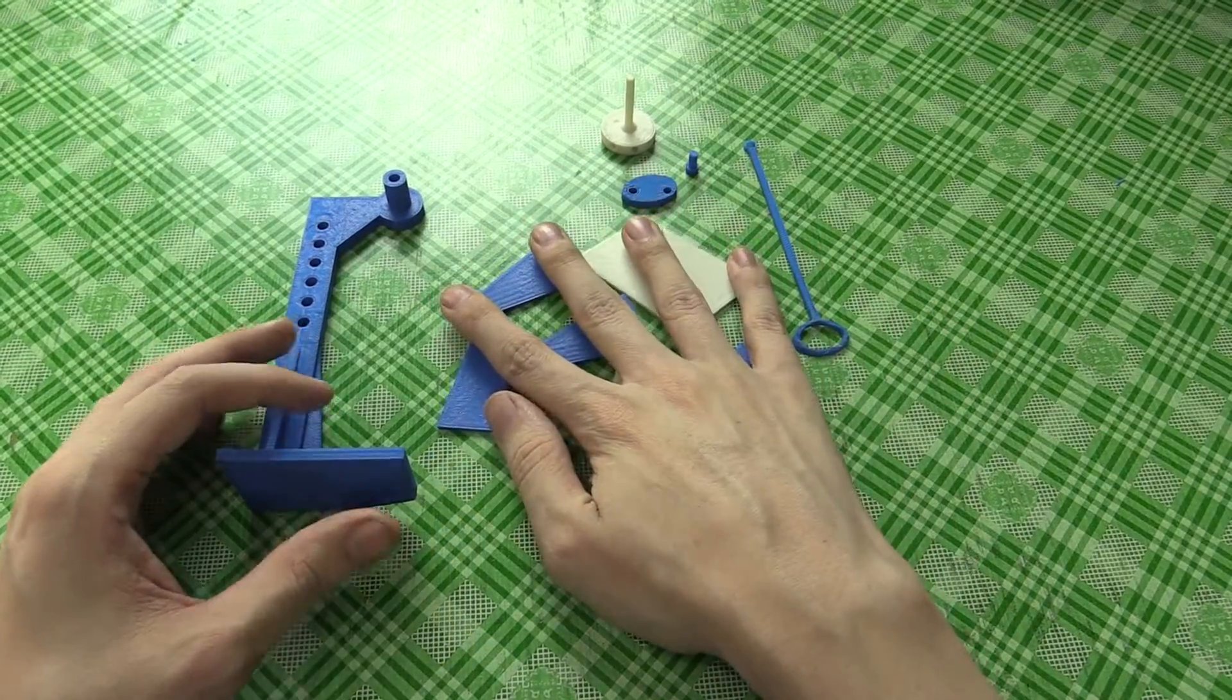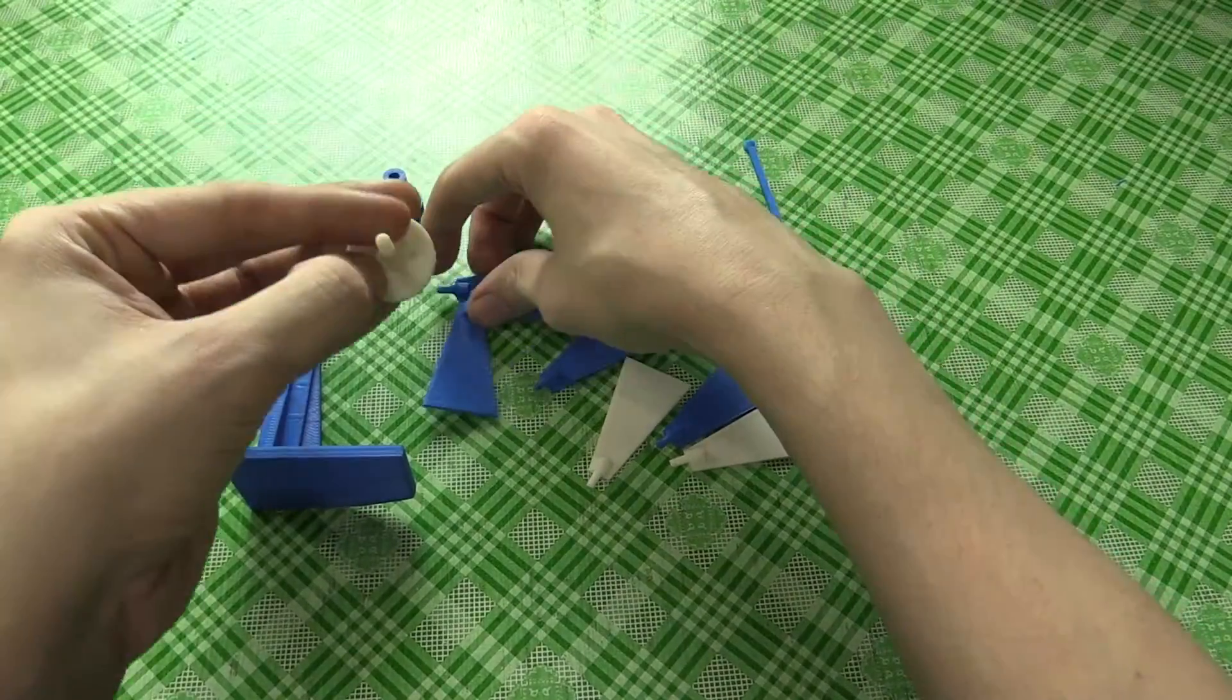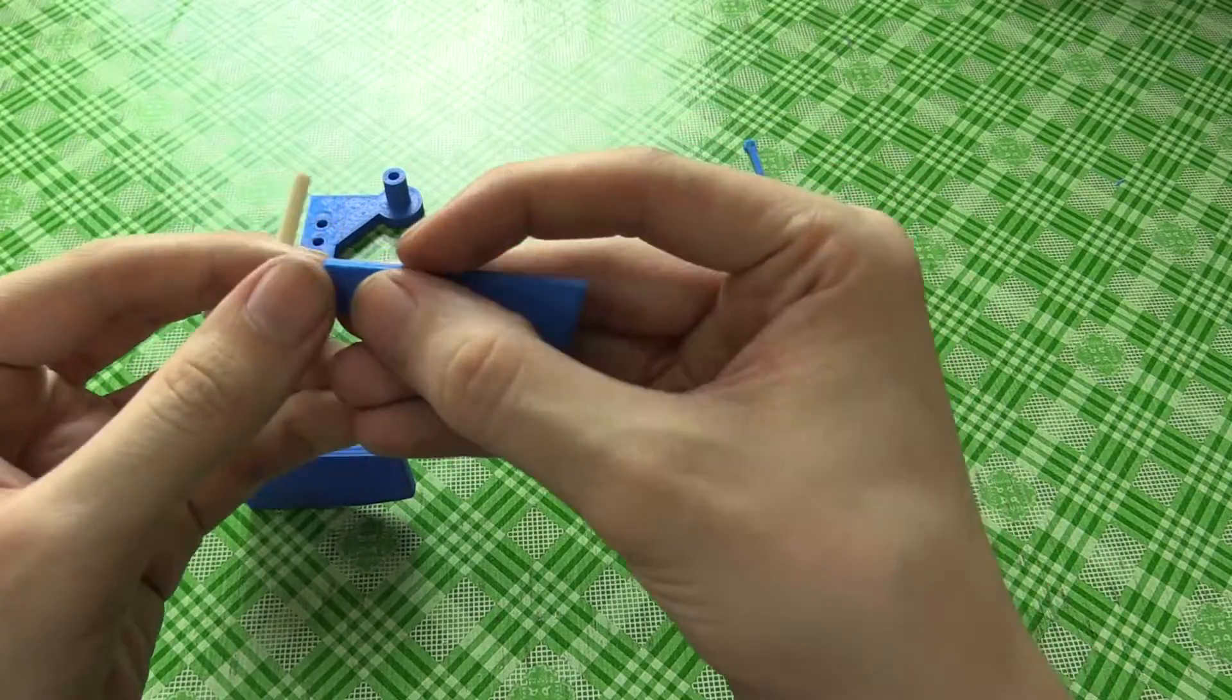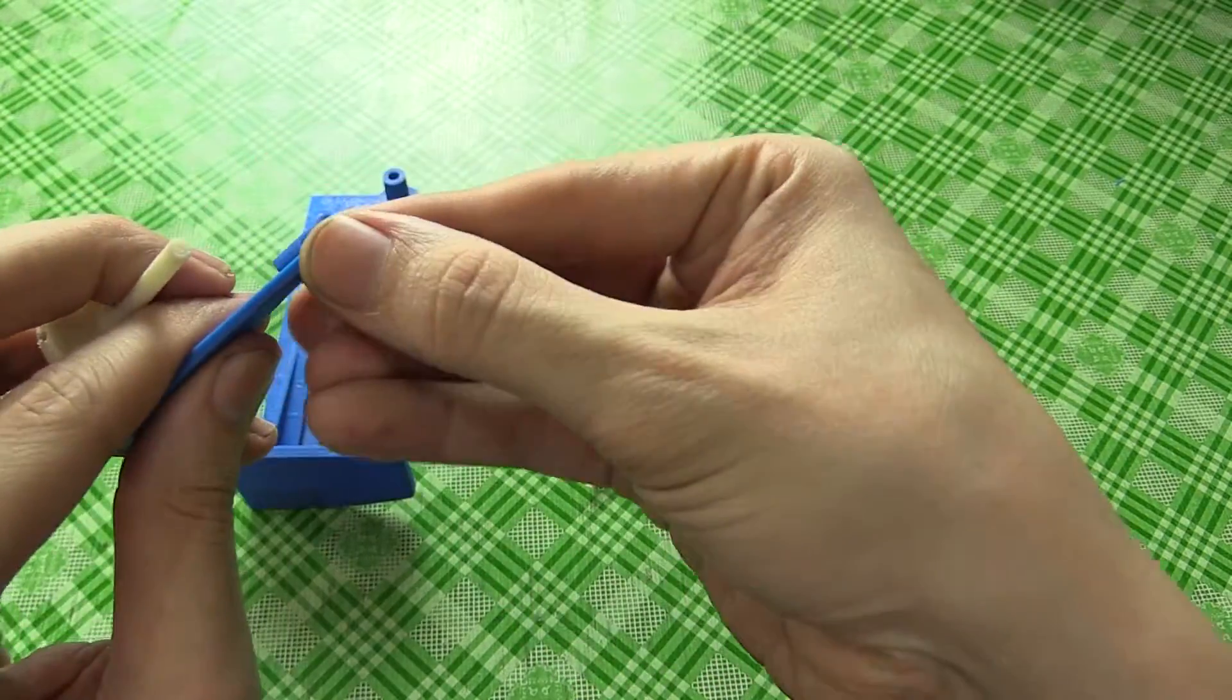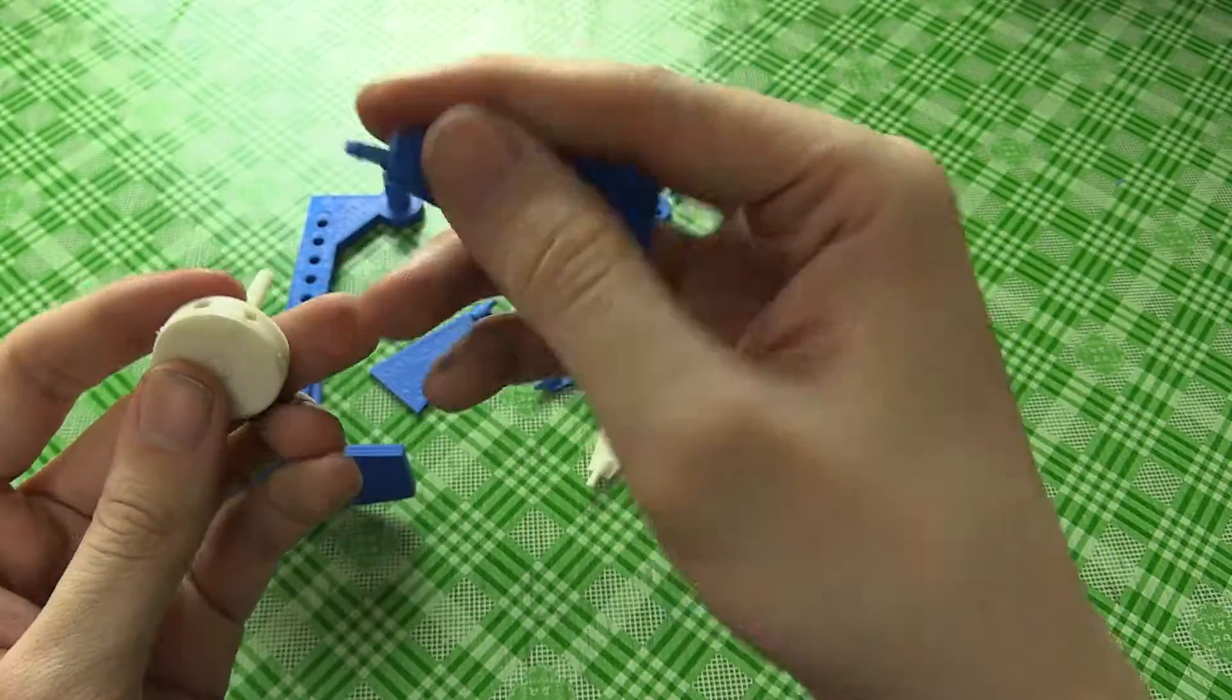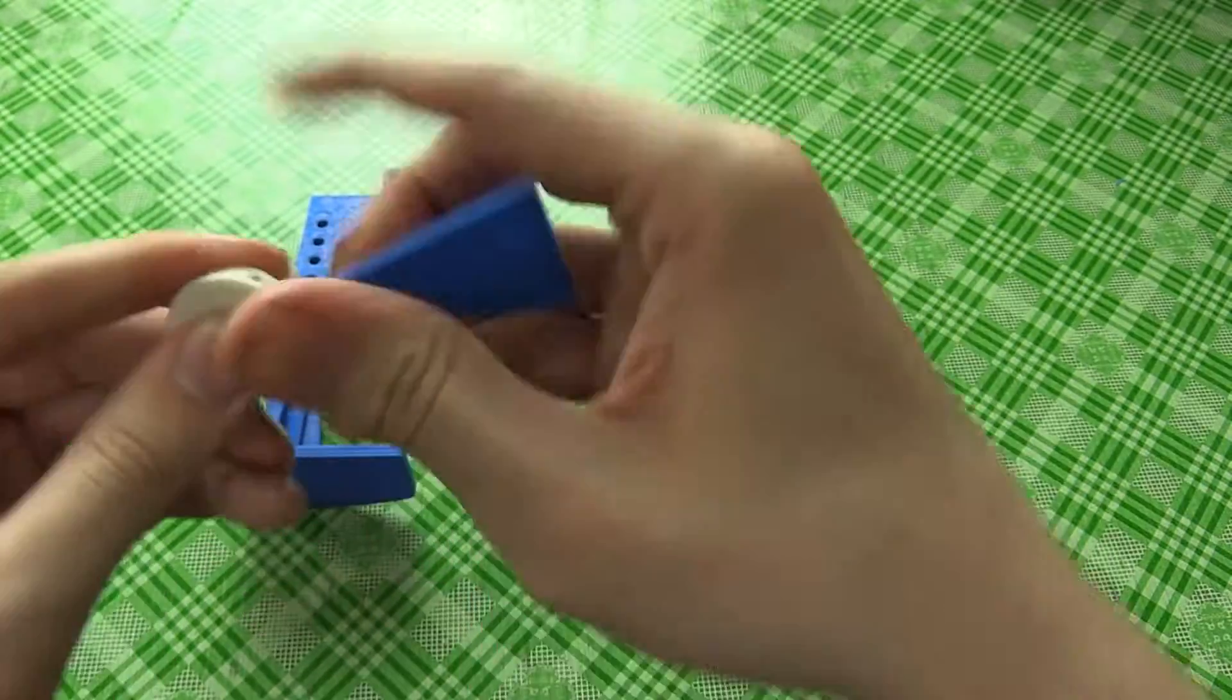Okay, so you should have eight propeller bits. And what you want to do is just start by putting those into your little hub here. Now you might have little strands of plastic depending on how well your printer handles this kind of small print with supports.